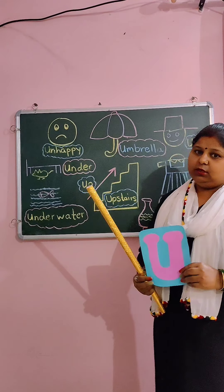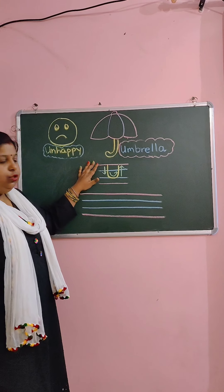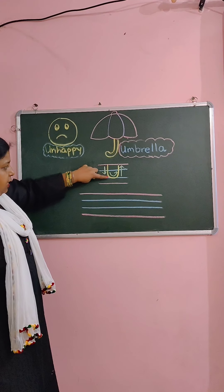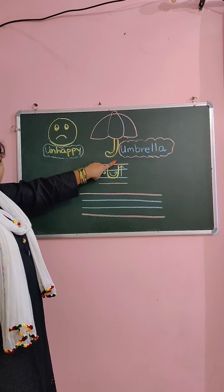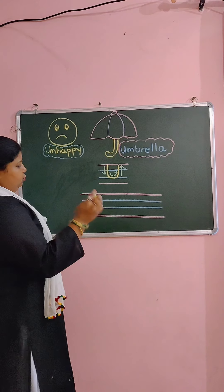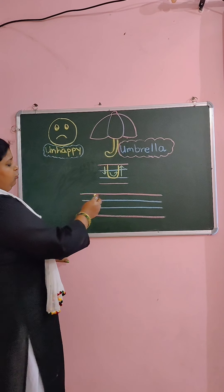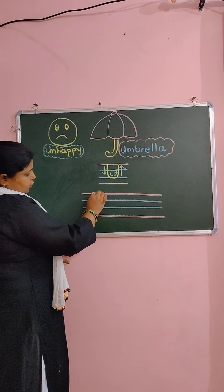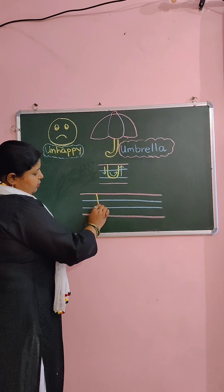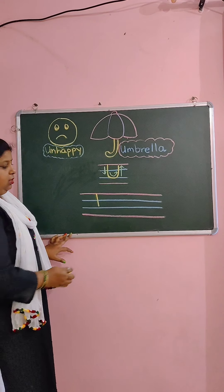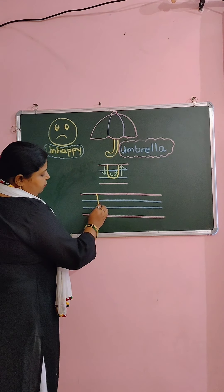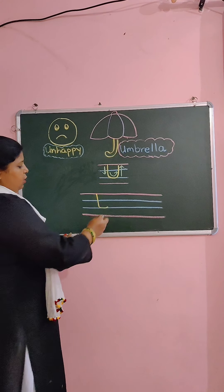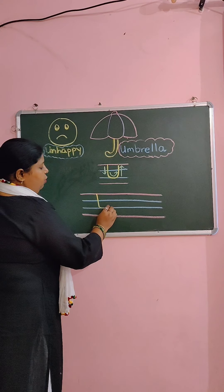Now let's practice the letter. How to write letter U. To write letter U we have to draw one standing line, then take a curve and go up. I will show you how to write. You all know you have to put your pencil on the red line. Now slowly come down and draw one standing line, then curve, and now slowly go up.